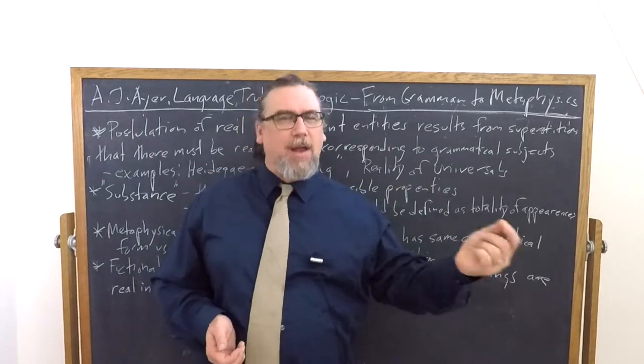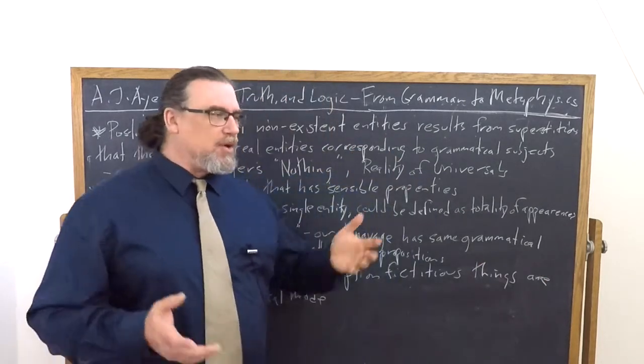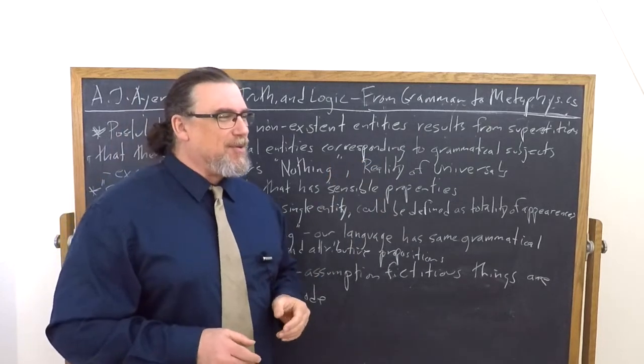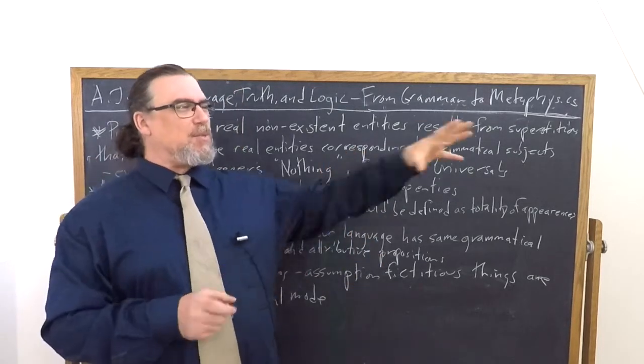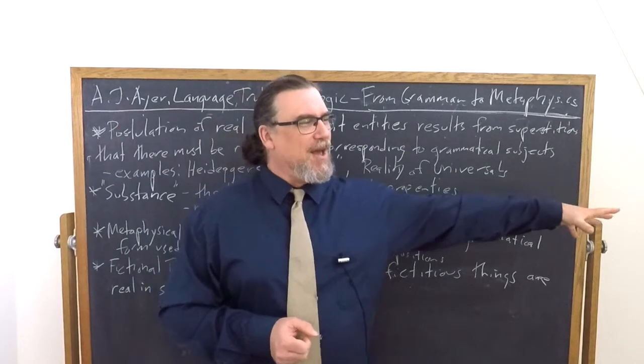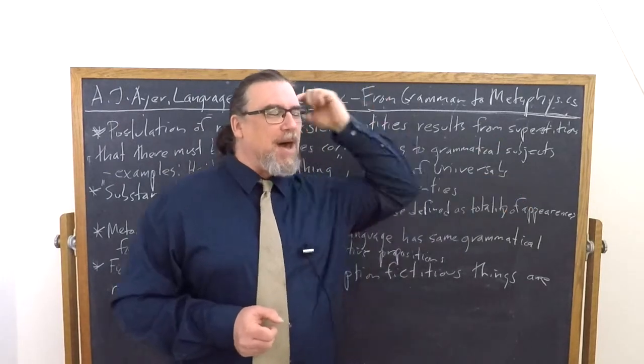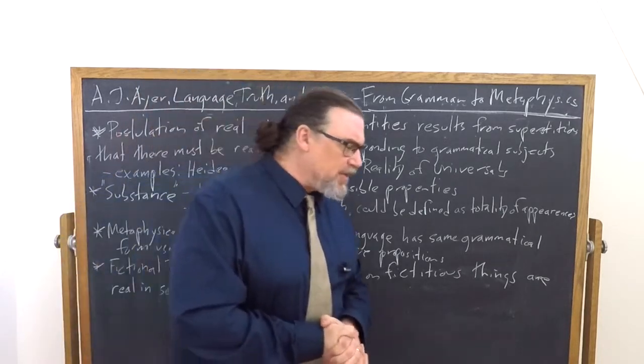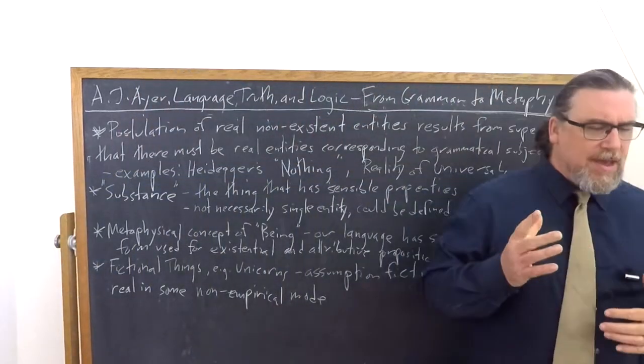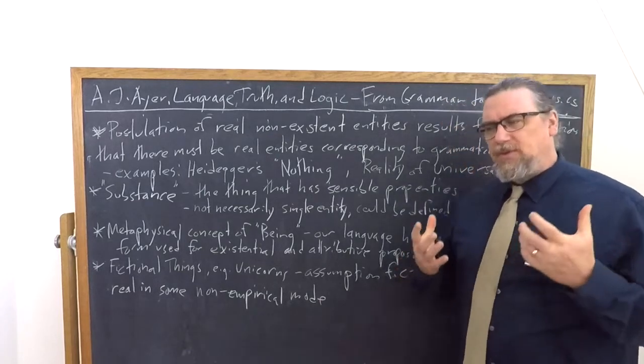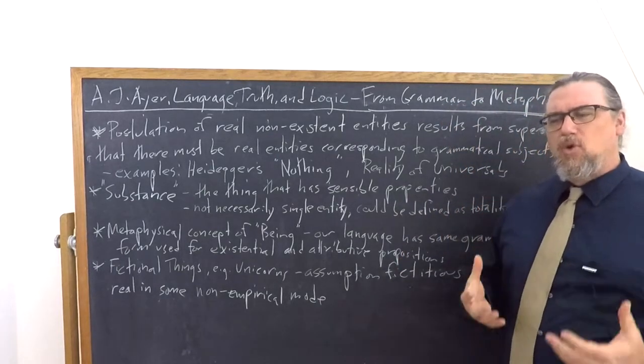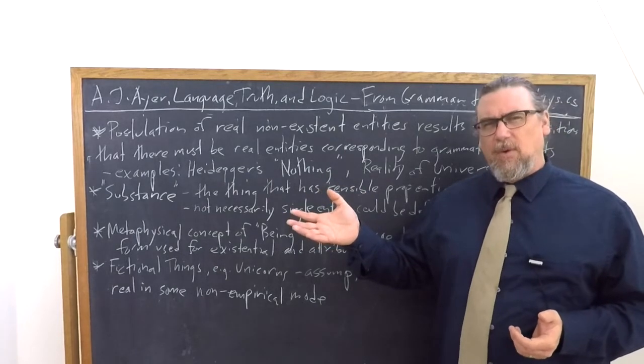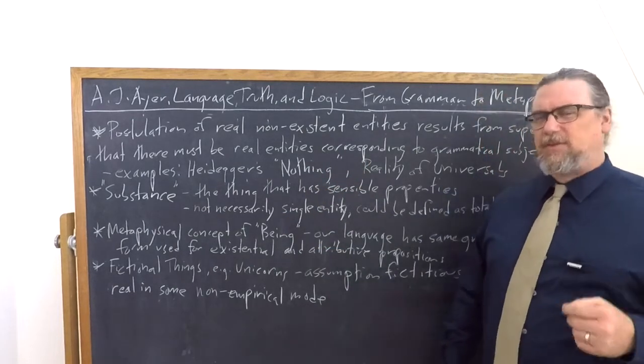We just think that they do because we're seduced once again by our grammar. The fact that we can talk about universals, we can say books do certain things, books are wonderful. Reading is fundamental. What is this reading that you're talking about? Is it all of the acts of reading combined? Is it some sort of substantive? So those are the sorts of things that Ayer has in mind. And he says that the general problem is that we assume that because we can predicate something of a subject, that that subject is therefore an entity. It exists in some way.